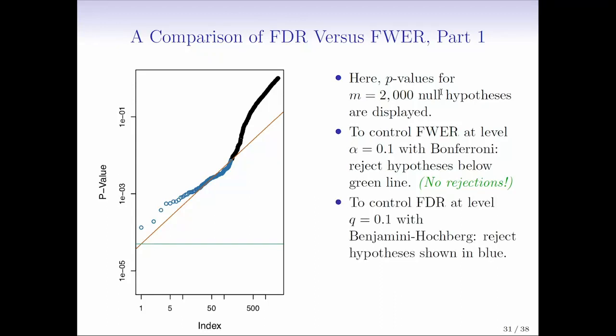But if instead we think about the false discovery rate, if we control the false discovery rate at level 0.1 or 10% with Benjamini-Hochberg, then that amounts to rejecting all of the null hypotheses that are shown in blue. And you can see that's a whole bunch of blue null hypotheses. Or rather, a whole bunch of P values corresponding to null hypotheses that we're going to reject. So what's going on here?